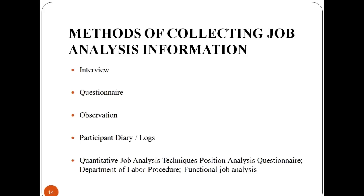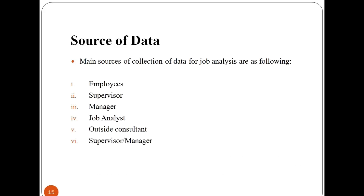The second type is the group interview, and the third is the supervisor interview, to get the supervisor's view on the job duties and responsibilities. Structured or unstructured questionnaires may be used to obtain job analysis information. Direct observations are useful when a job consists of mainly physical activities. The employee records every activity in a diary or log, along with the amount of time to perform each activity, to produce a complete picture of the job.